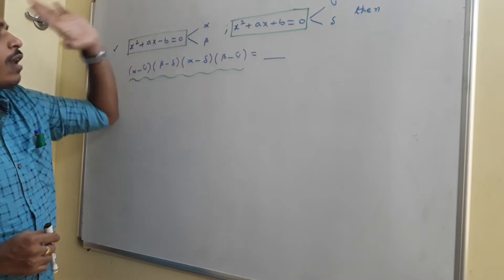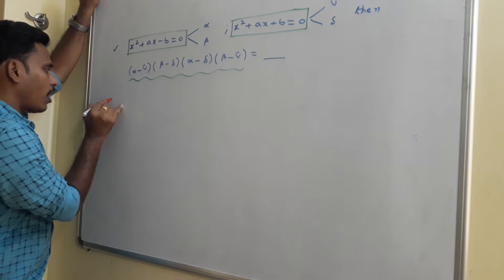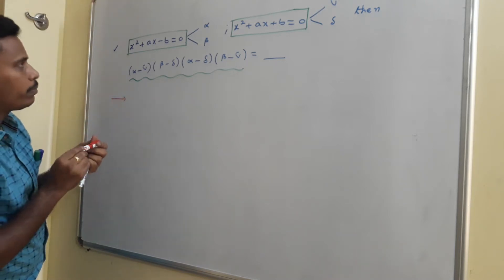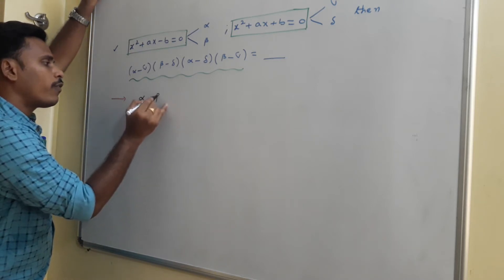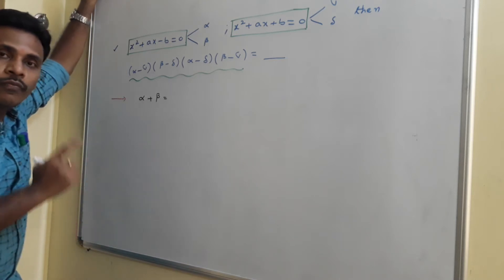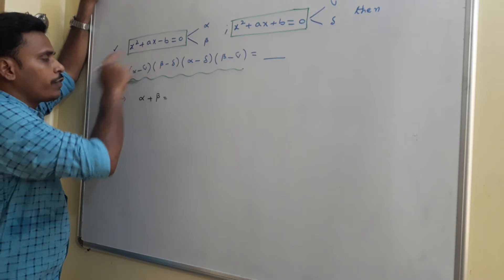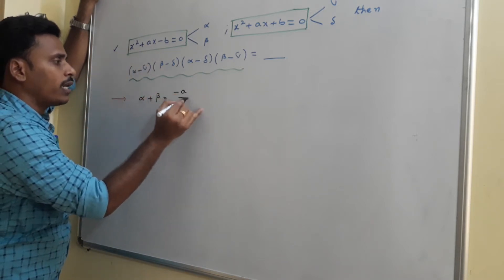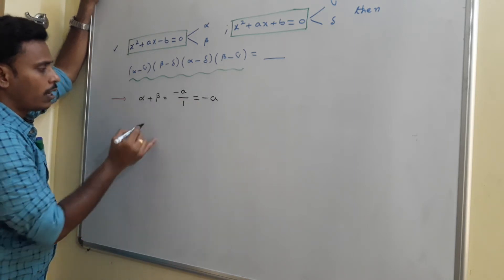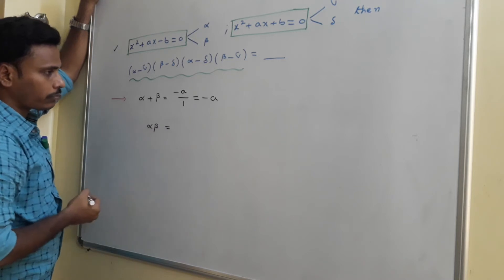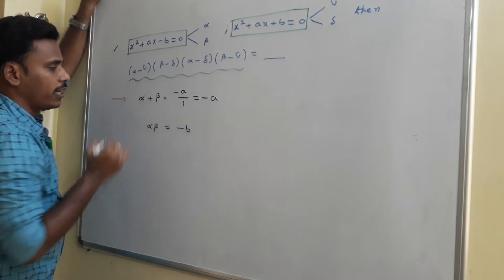For the first equation, alpha and beta are the roots. Sum of roots: alpha plus beta equals minus(x coefficient) divided by (x² coefficient) = minus a divided by 1 = minus a. Product of roots: alpha times beta equals the constant term divided by x² coefficient = minus b.